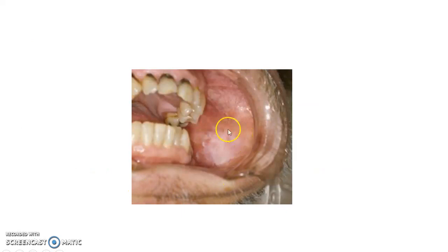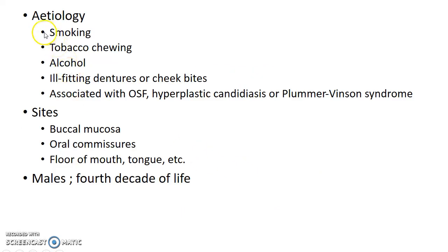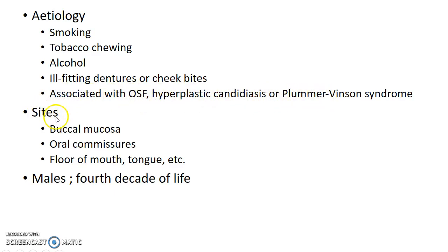This is how a patient with leukoplakia presents to you. The causes of leukoplakia include smoking, tobacco chewing, alcohol, and ill-fitting dentures or cheek bites leading to chronic trauma. Leukoplakia is also associated with oral submucous fibrosis, hyperplastic candidiasis, or Plummer-Vinson syndrome. The most common sites of leukoplakia are the buccal mucosa and oral commissures. It can also occur in the floor of mouth and tongue.